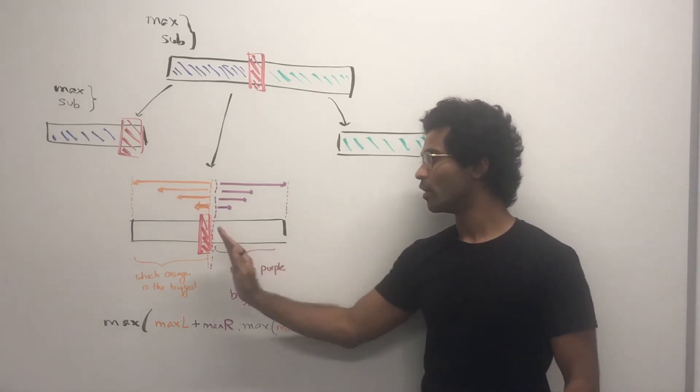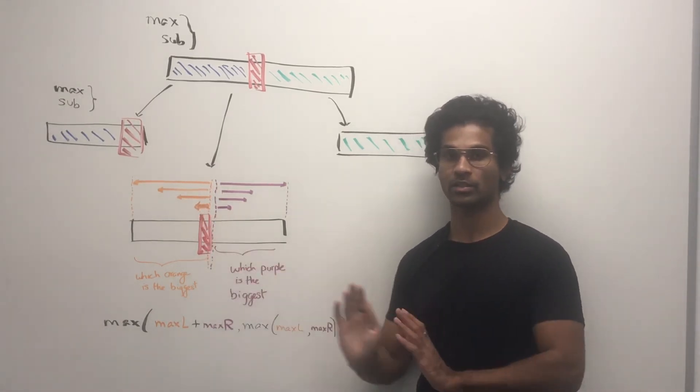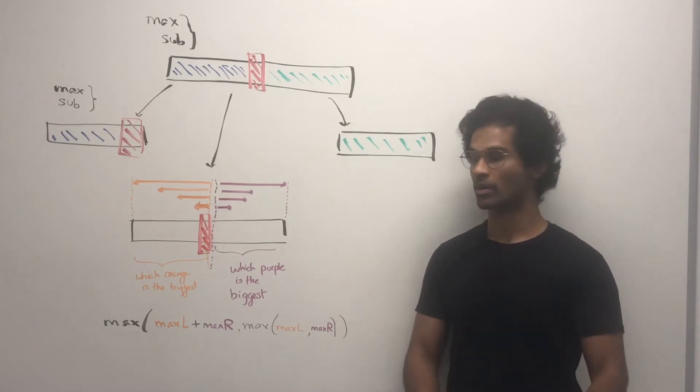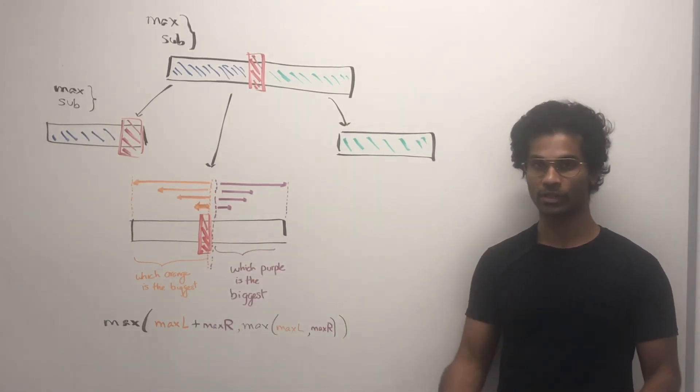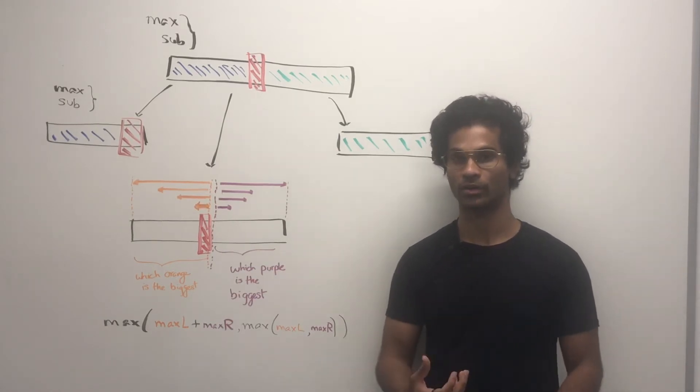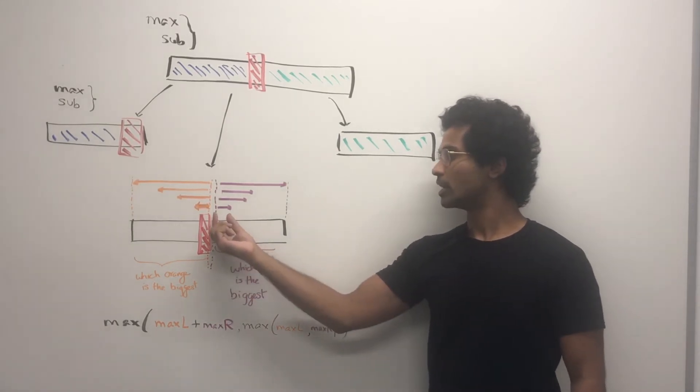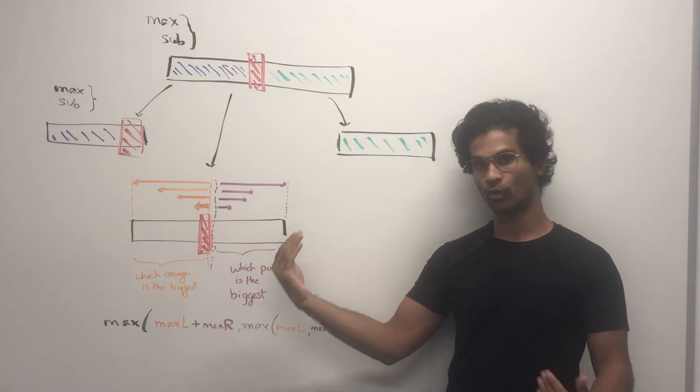Similarly, for the right side, we exclude red because red has been included by the left side already. The purple side represents another for loop for the right half of the array that we're going to iteratively calculate. So we keep a running count for the right half using a for loop as well.